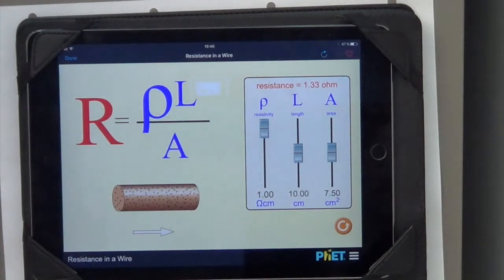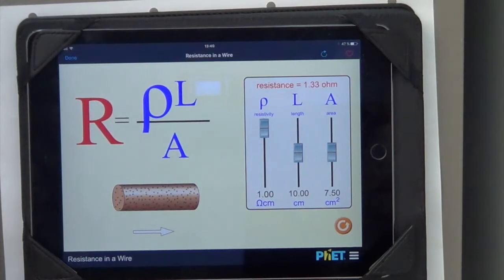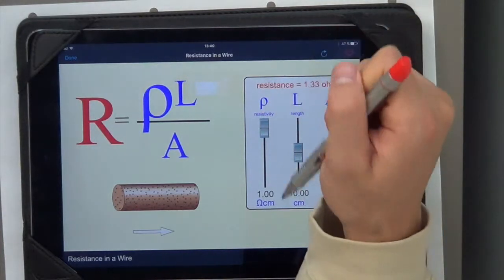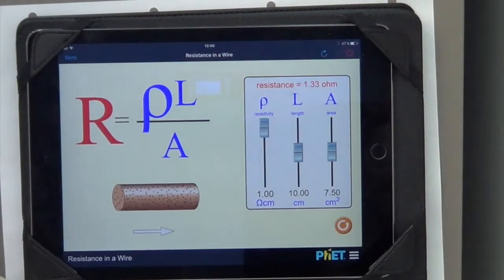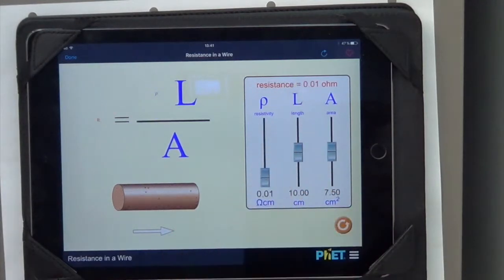So resistivity is basically a property of the material. A good material that resists current would be paper - it's a poor conductor, it's a good insulator, so it will have a high resistivity value. However, a good conductor like copper will have a very low resistivity value, meaning its resistance is very low.